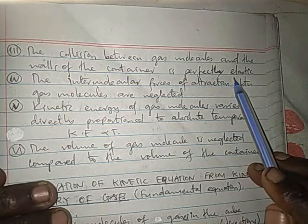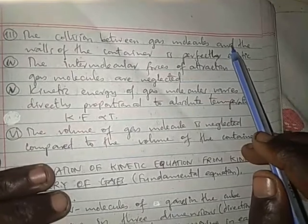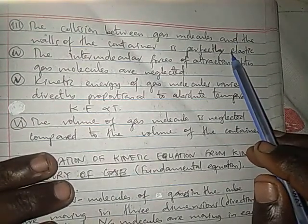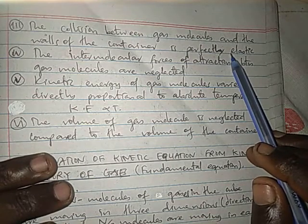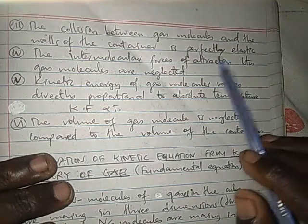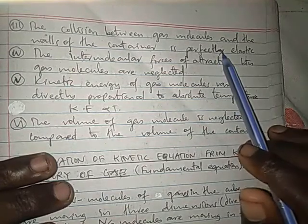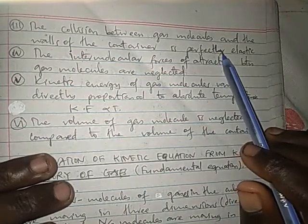And if energy is lost, it means that is not a perfectly elastic collision. In a perfectly elastic collision, there must be no loss of energy. So this doesn't occur actually in real life, but this is the assumption.